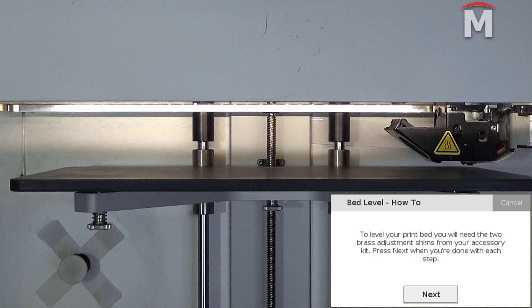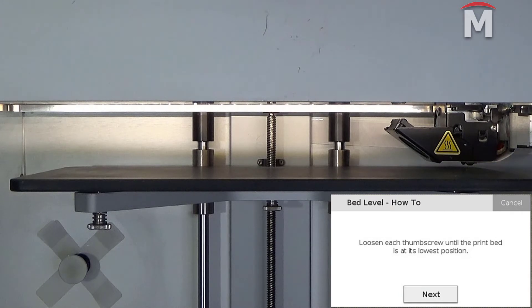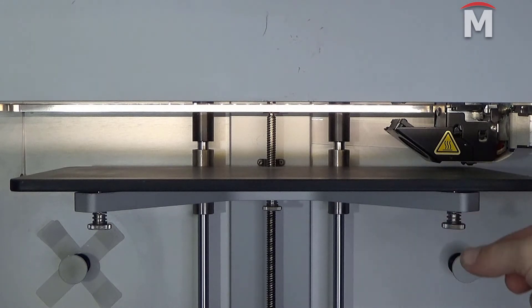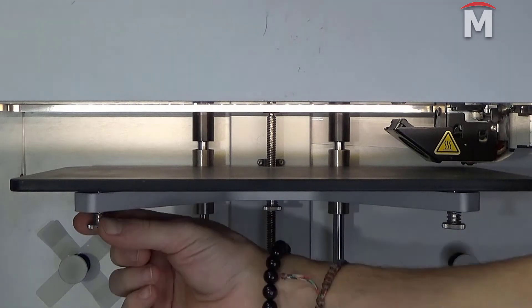At this point, we want to ensure that we have both brass leveling shims from our accessory kit and then hit next. We will then loosen each of the three thumb screws below the print stage to its lowest point and press next.